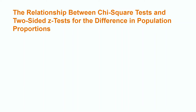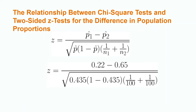Now let's calculate the z-test statistic and p-value. We do this by subtracting p-hat 1 from p-hat 2 and dividing by the square root of p-hat times the quantity 1 minus p-hat times the quantity 1 over n1 plus 1 over n2. This gives us a test statistic of negative 6.13 and a p-value of 0.0000 — the same as the chi-square test for homogeneity.